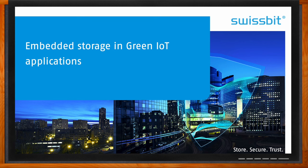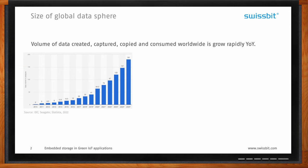We're talking about embedded storage in green IoT applications today. There is more and more data being created, captured, copied, and consumed worldwide, and this amount is growing rapidly year on year. The global data sphere is doubling every three years, and by 2025 it will reach roughly 181 zettabytes. One zettabyte is one billion terabytes — a number that's very difficult to imagine.